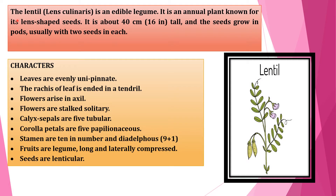The lentil is an edible legume. Lens culinaris is actually the scientific name of Masur. It is an annual plant known for its lens-shaped seeds. You can see in the diagram — this is called Lentil or Masur, this black color one. Follow the diagram and you will understand better.